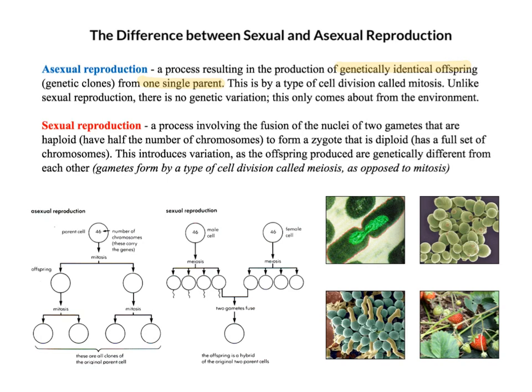Crucially, with asexual reproduction, there is no genetic variation. So we've got a process resulting in the production of genetically identical offspring from one single parent, and it's a type of cell division known as mitosis, which hopefully should be familiar at this stage for many of you. And unlike sexual reproduction, there is no genetic variation - we're literally just creating clones.